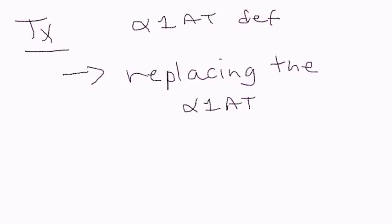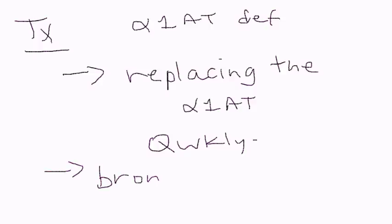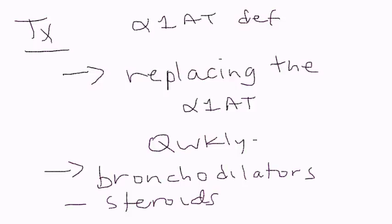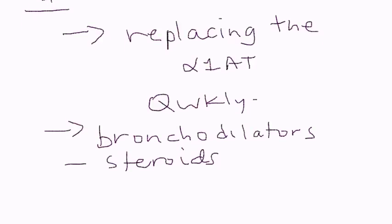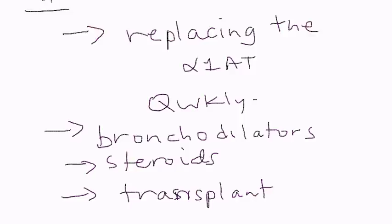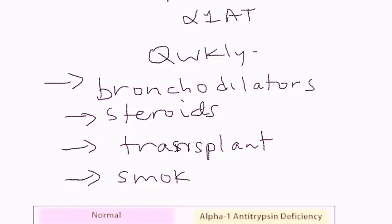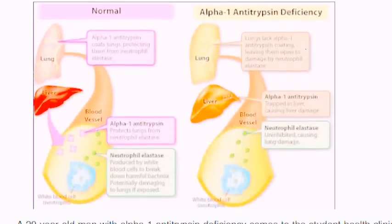Treatment involves replacing the alpha-1 antitrypsin enzyme by giving it in the form of a weekly injection. Other treatments for the respiratory component include bronchodilators and steroids — the same way you would treat emphysema or COPD. In the most extreme cases, a lung or liver transplant may be needed. Importantly, patients should avoid smoking, which worsens lung damage, and avoid alcohol, which worsens liver damage.